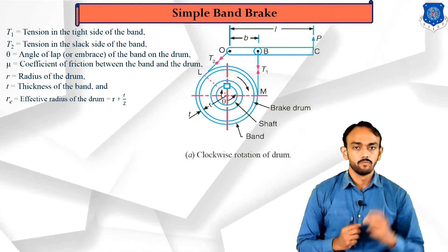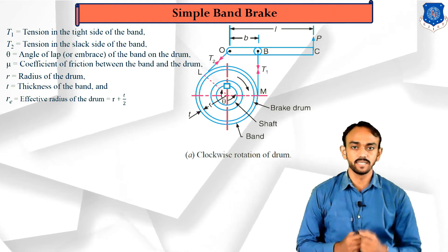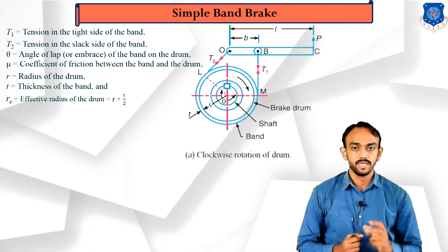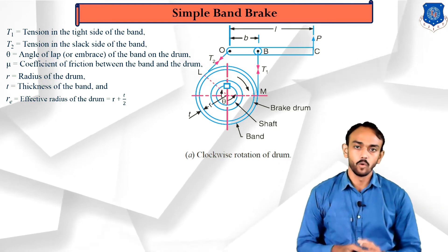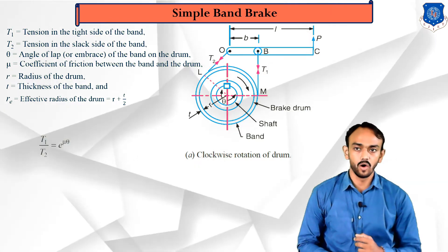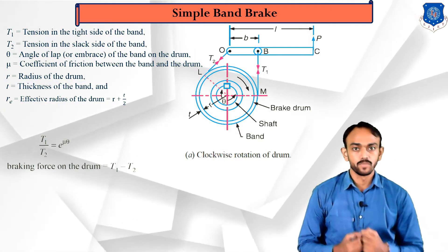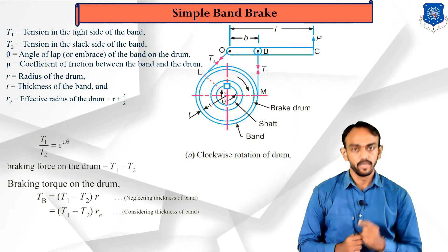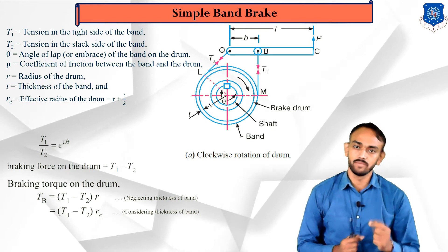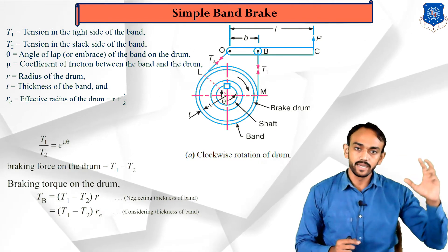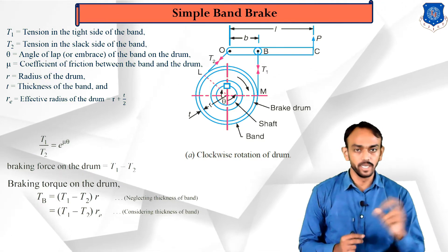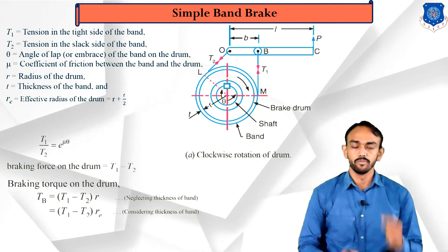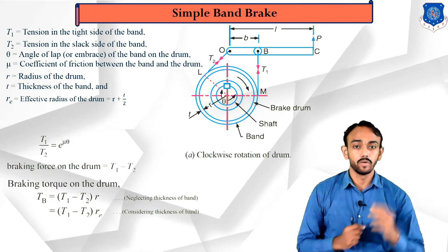Just as in a belt drive, there is a relation between the tight side and slack side using friction. The equation is: T1/T2 = e^(mu·theta), or in logarithmic form: 2.3 × log(T1/T2) = mu·theta. The braking torque is given by: Braking Torque = (T1 − T2) × r, or if band thickness is considered, Braking Torque = (T1 − T2) × R_e.